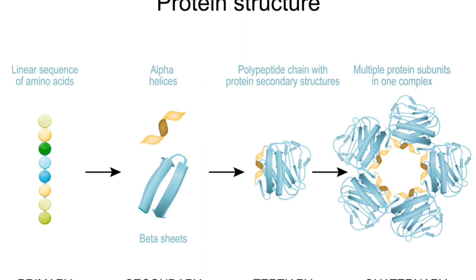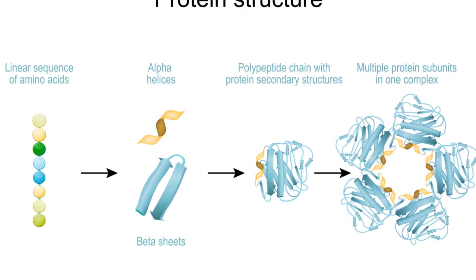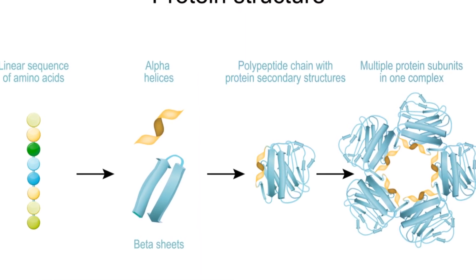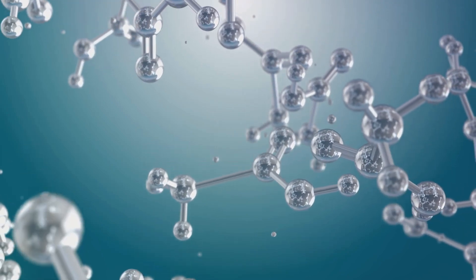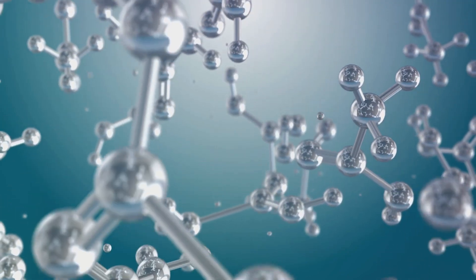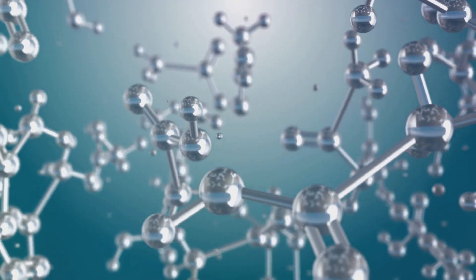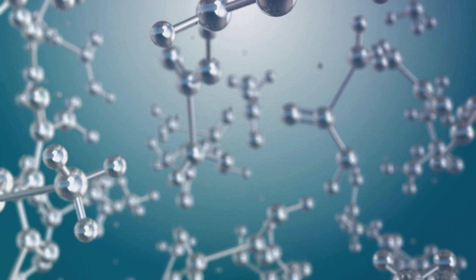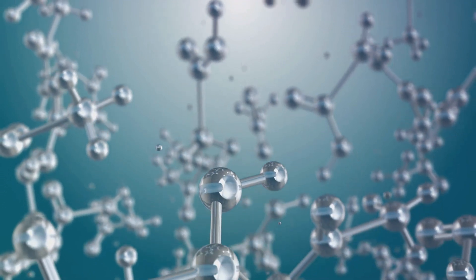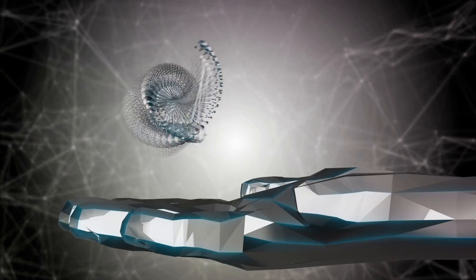While AlphaFold2 could predict the structure of a single protein in isolation, the game-changer in AlphaFold3 is that it can predict how multiple proteins interact with each other. This is a crucial advancement, as proteins rarely act alone in our bodies. Understanding these interactions could revolutionize our approach to drug design and disease treatment.